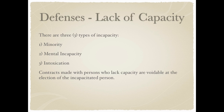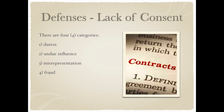Another defense is lack of consent. Even if your name is on the contract and you signed it, there are four main categories of lack of consent. The first is duress — imagine somebody holding a gun to your head saying if you don't sign this I'm going to shoot you or your family. You feel compelled to sign because you don't want anyone to get hurt. That is signing something under pressure, under coercion, under duress.